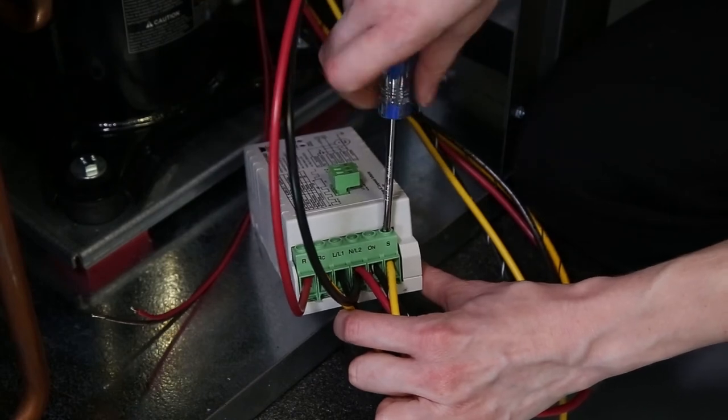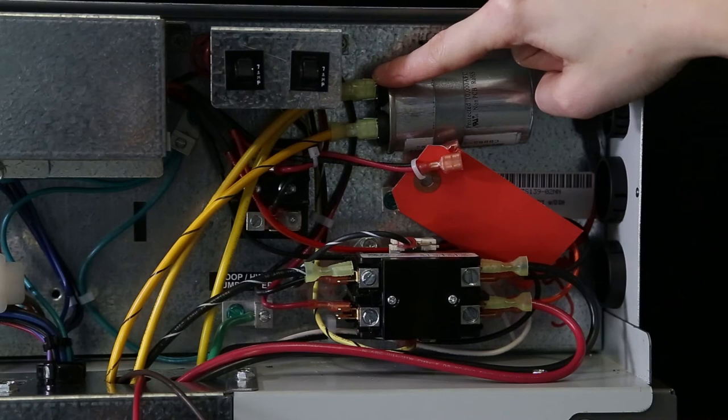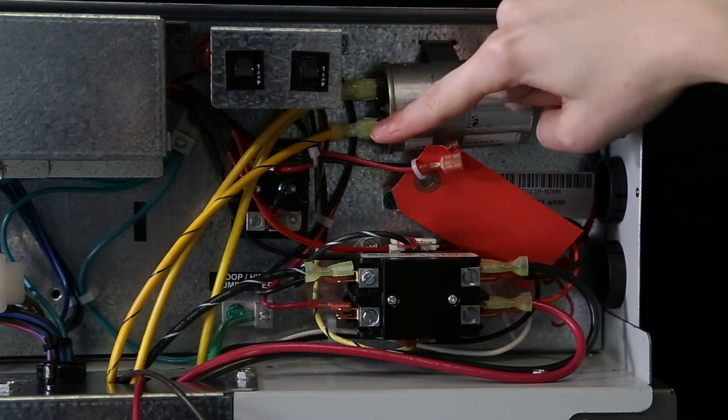The solid yellow 10 gauge wire that runs from the S terminal on the soft start module to the capacitor must go to the same side of the capacitor as the solid yellow 10 gauge start wire from the compressor. The yellow 10 gauge wire with the black stripe connects to the opposite side of the capacitor.